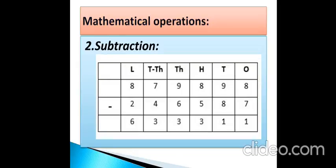The next mathematical operation is subtraction. The numbers are 8,79,898 minus 2,46,587. By subtracting, the answer is 6,33,311. This is how we subtract two large numbers. The symbol we use for subtraction is called minus, and subtraction is also known as difference.